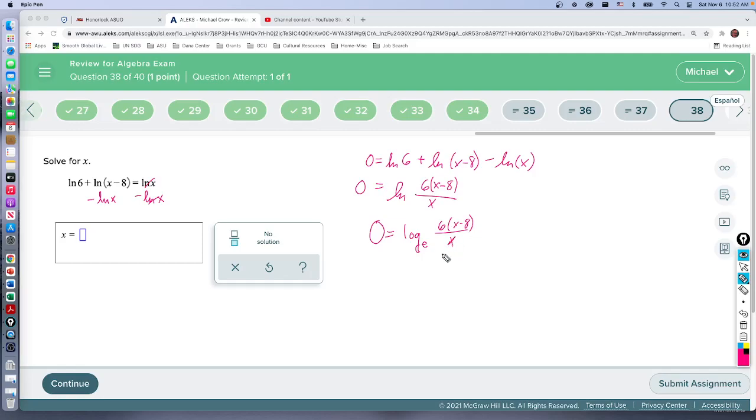So the log dance is that the base becomes the base. The answer to the logarithm becomes the exponent, and the stuff inside the logarithm becomes the answer. So 6(x minus 8) over x. e to the zero—anything to the zero power, except for zero, is equal to one.